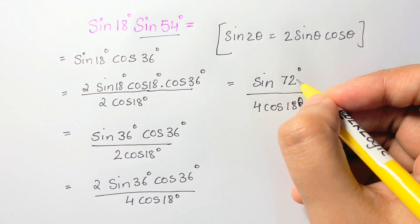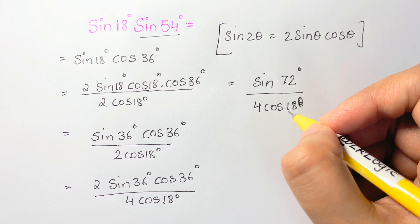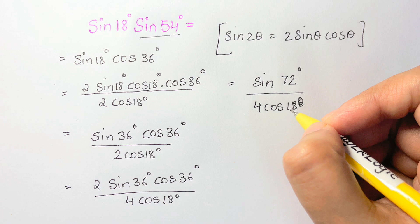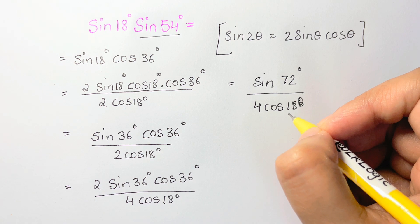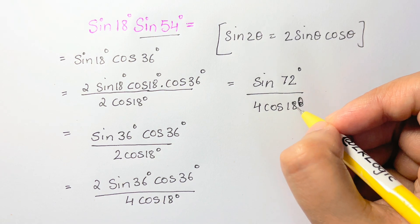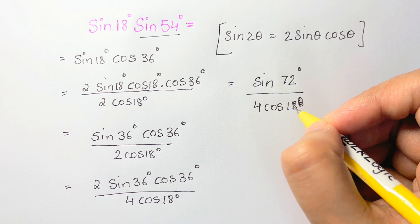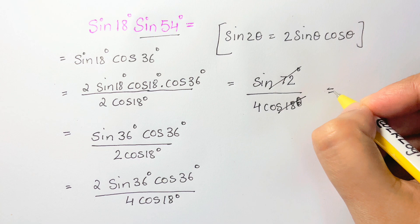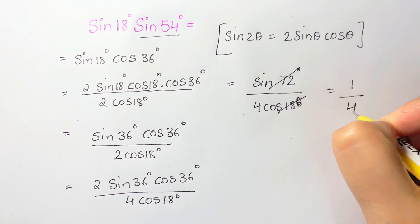However, sine 72 degrees equals cos 18 degrees because those two angles are complementary angles, which means that the sum is 90 degrees. So you can cross out the two angles. You're left with one quarter, and that's your answer.